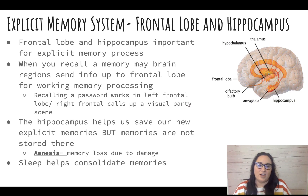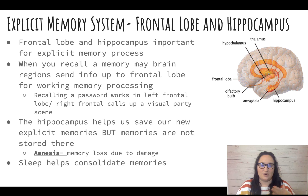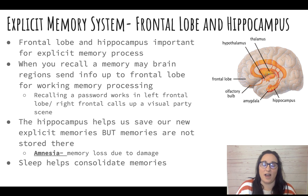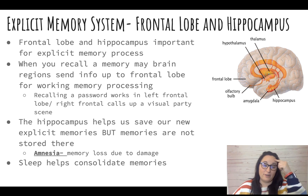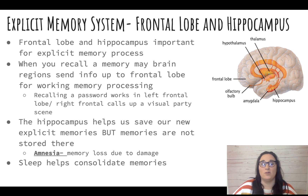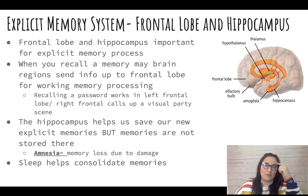When talking about recall of memory, there are two different types: explicit and implicit. Explicit refers to our effortful, conscious, declarative memory. The frontal lobe plays an important role in explicit thought because it requires working memory — we have to consciously think about it.